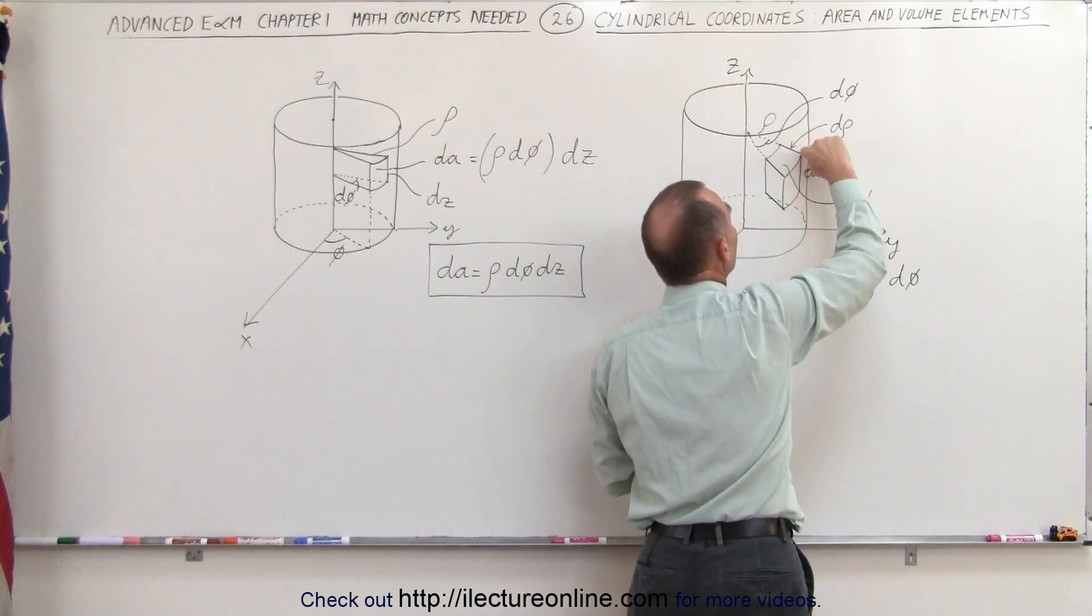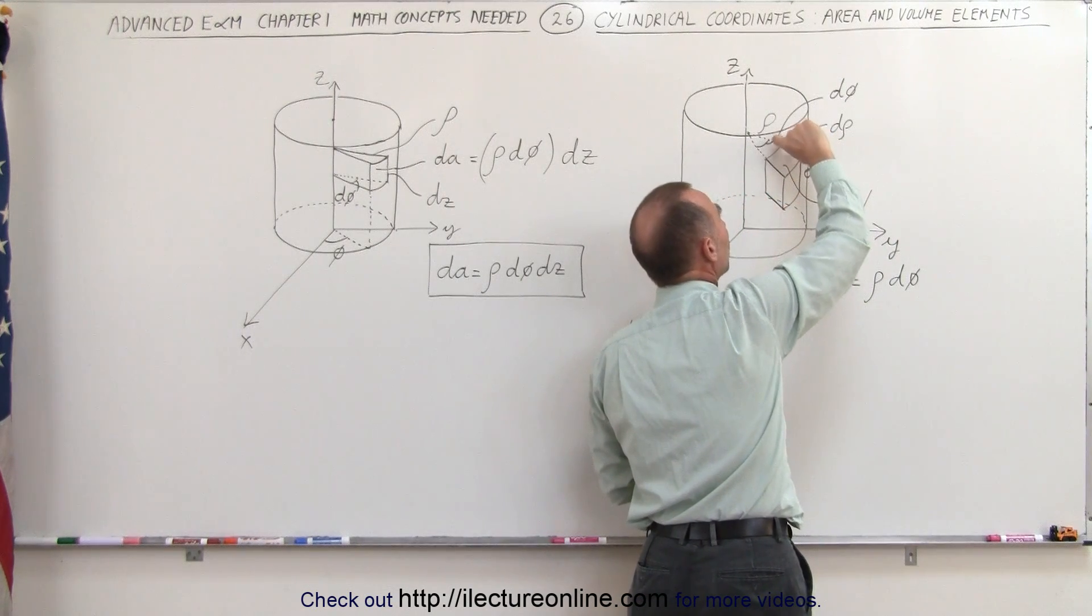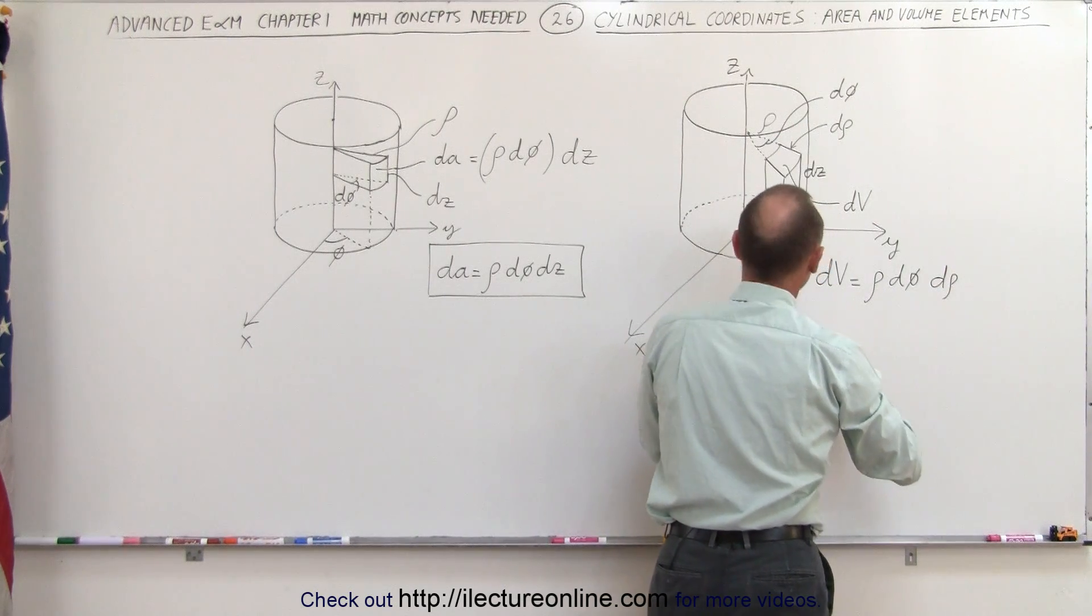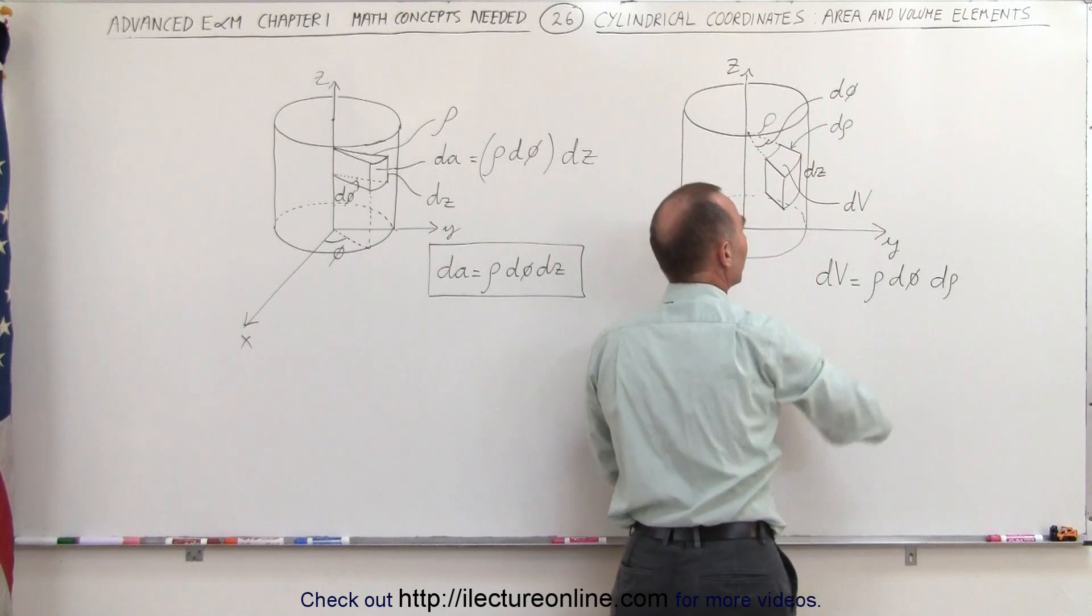The distance from there to there, we'll call that a small change in rho, therefore they call that dRho. And finally, we need to have the height which is dz.